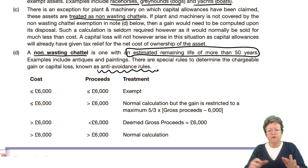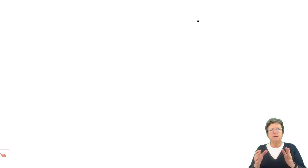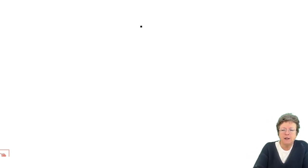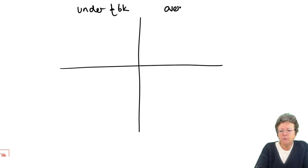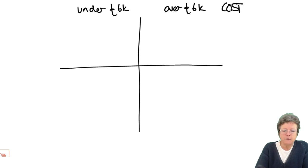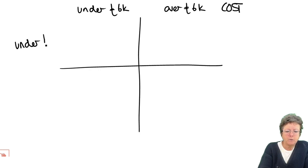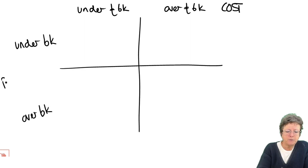I'm going to draw this out so that you can see it, because this is the way I was taught and I find it much easier to understand. So we have a grid: cost — under £6,000 or over £6,000. And proceeds — under £6,000 or over £6,000.